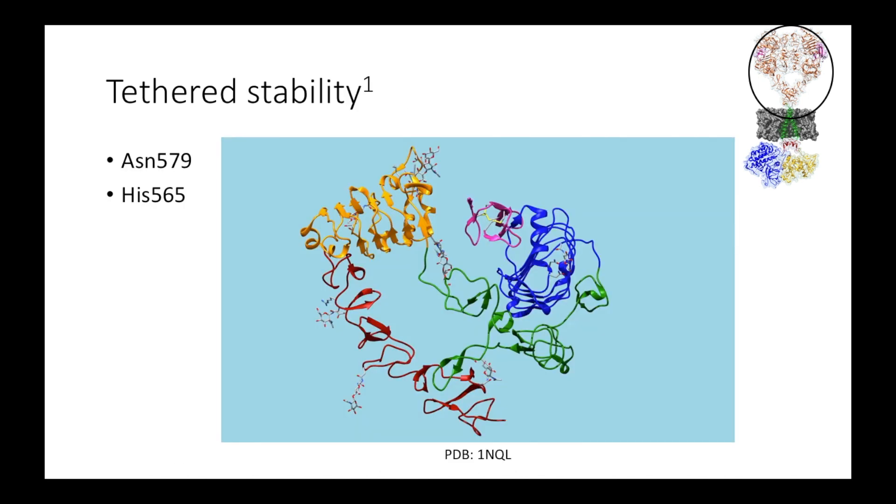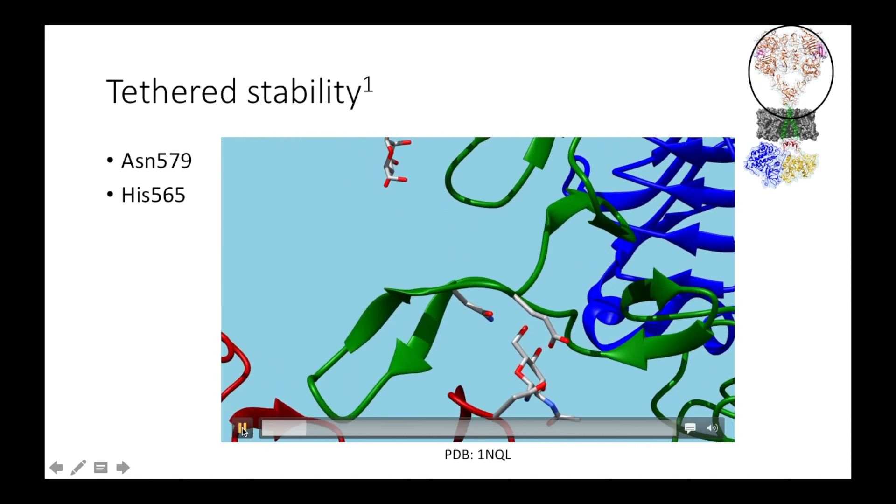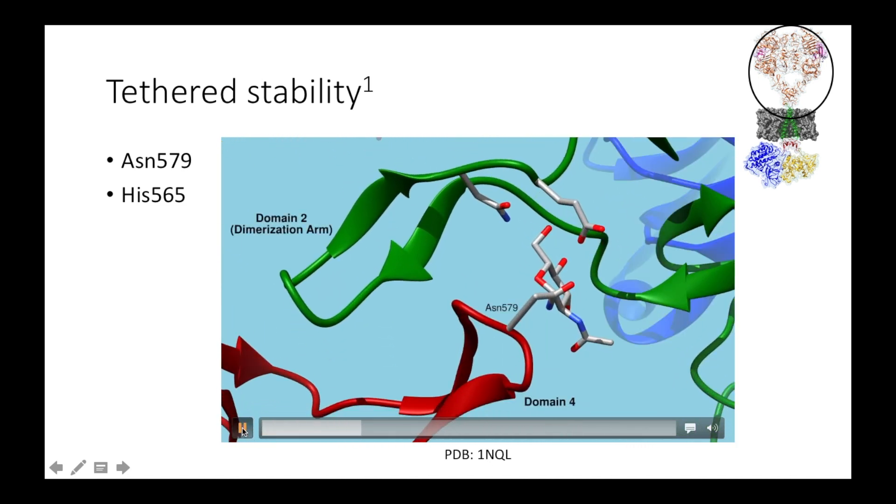The interaction between domains 2 and 4 in the tethered conformation is stabilized by two key residues. I'm going to zoom in here on asparagine 579 in this region. This part of domain 2 is called the dimerization arm because it plays a major role in the dimerization interface. Here it serves to stabilize the tethered conformation instead.